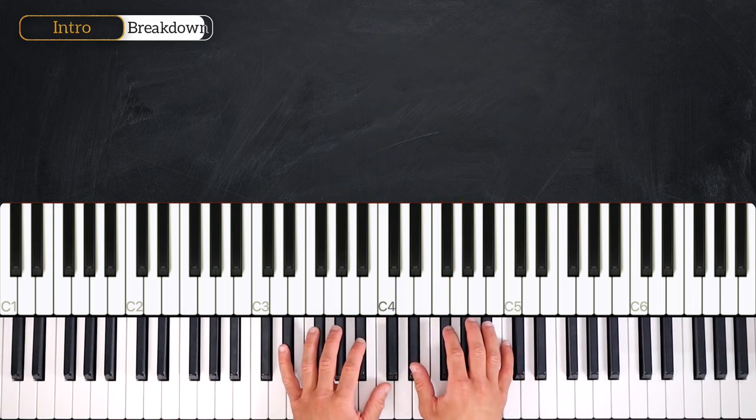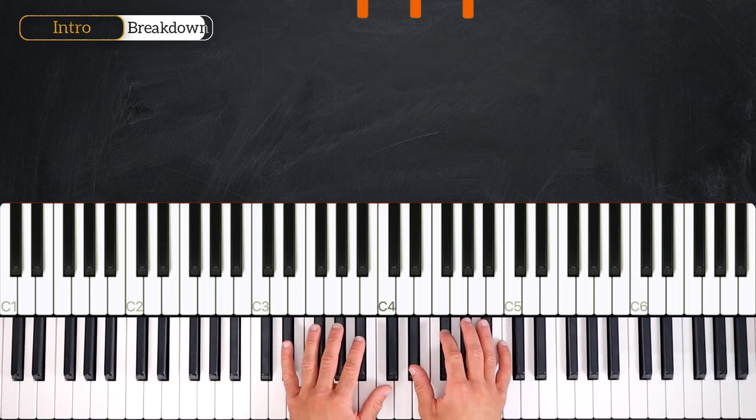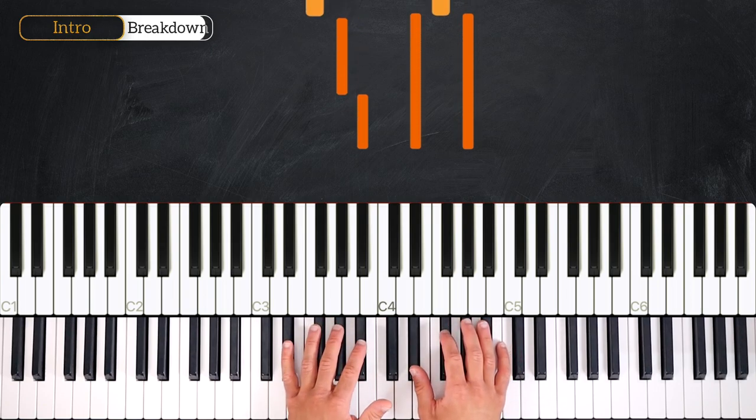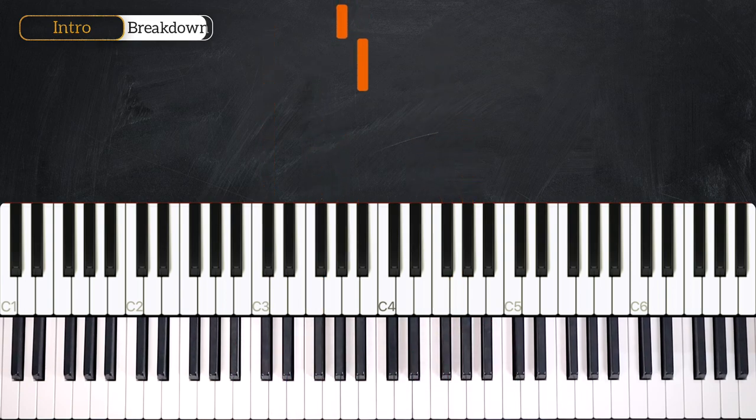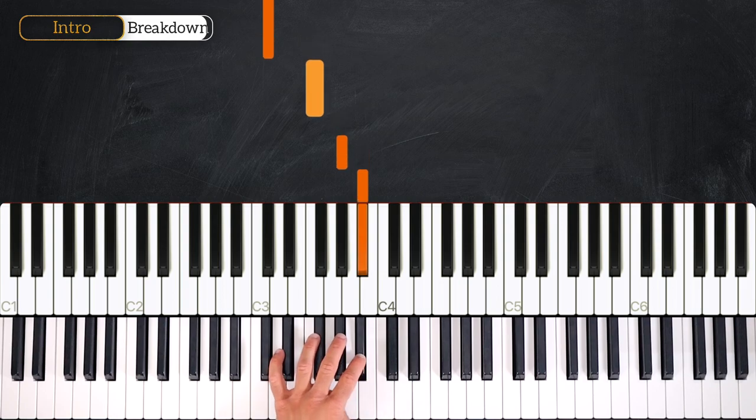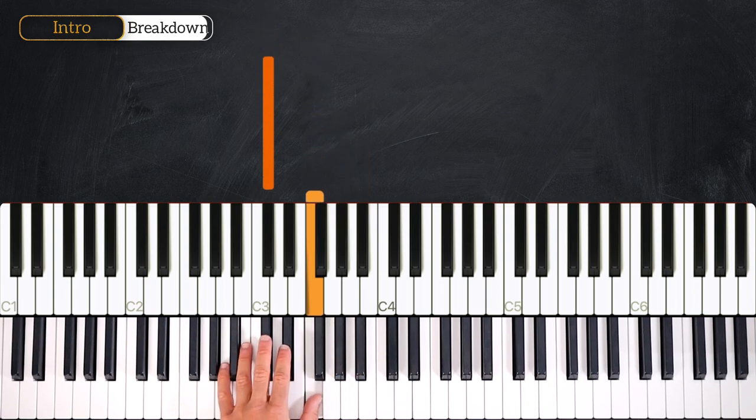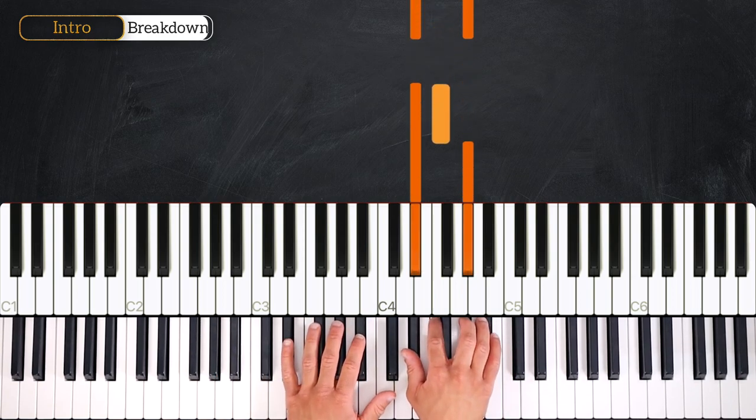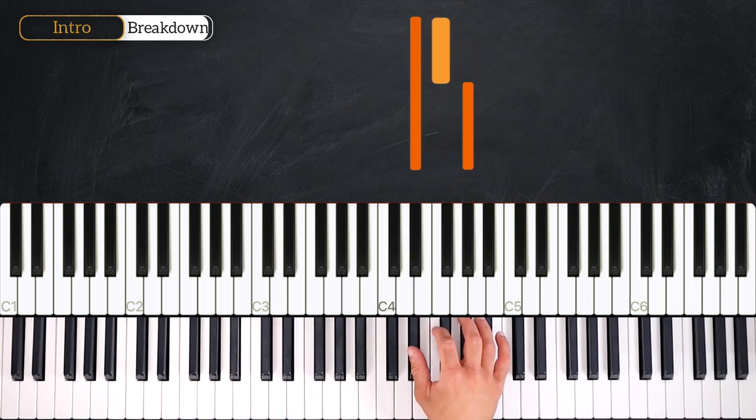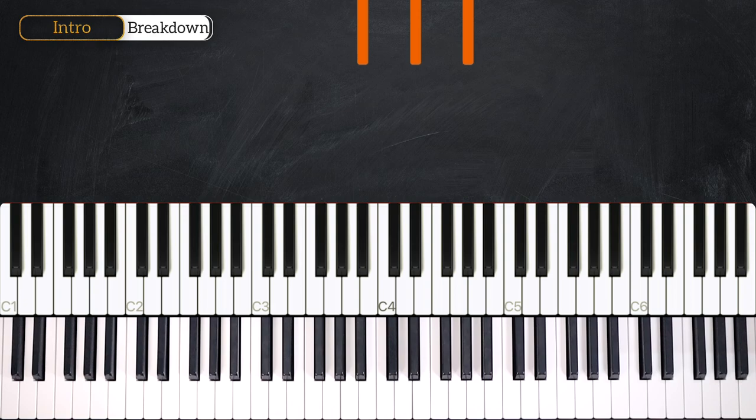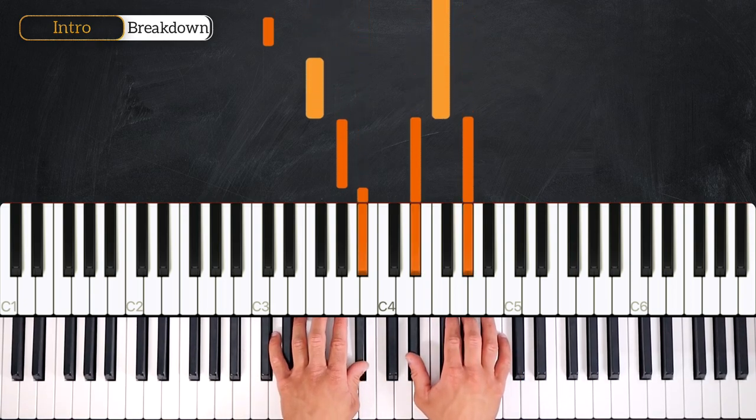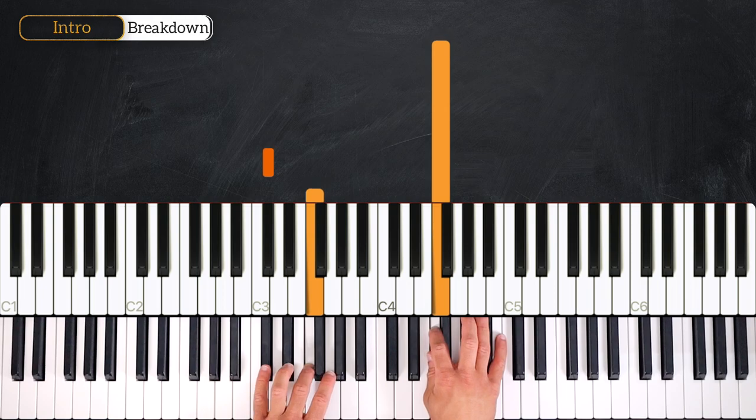Okay, from here we'll play Bb sus4, and the left hand is going to continue moving downward. So here the left hand plays Bb, Ab, F, Db. The right hand plays this. So Eb, Ab into F. So hands together it goes like this. 3, 4, 1, 2, 3, 4.